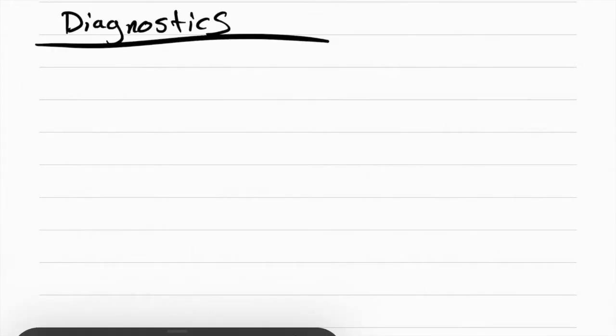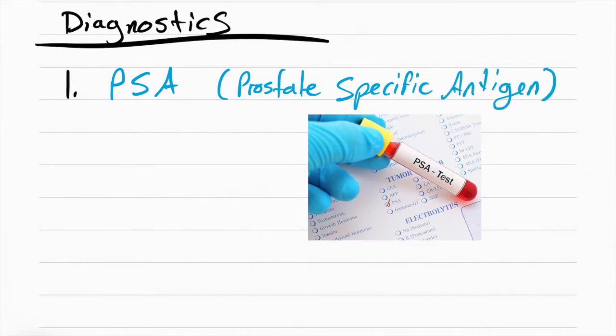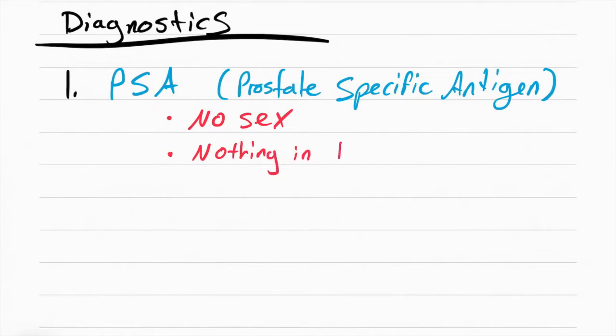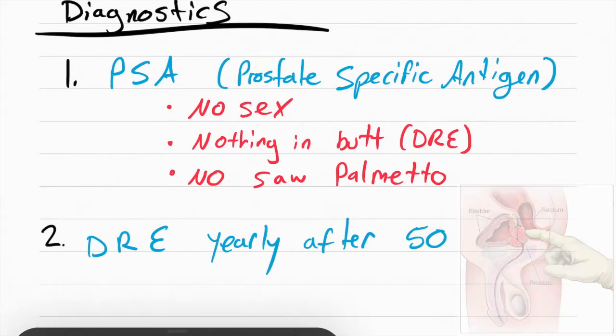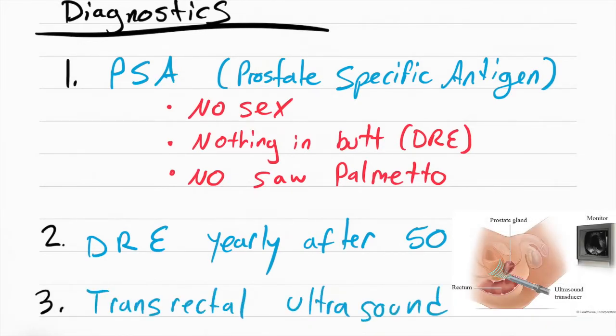Now the diagnostics for BPH are going to go in this order. The first thing we want to get done is a PSA, prostate-specific antigen. This checks for prostate cancer. It's a blood draw. You have to make sure before the patient gets this they have no sex, nothing in their butt, so no digital rectal exams, and no saw palmetto. The second thing that can be done is a DRE, a digital rectal exam. The provider will insert their finger into their anus and they're going to literally just feel for an enlarged prostate. This should be done after 50. The last thing that can be done is a transrectal ultrasound, and this is done after the PSA and the DRE come back positive.